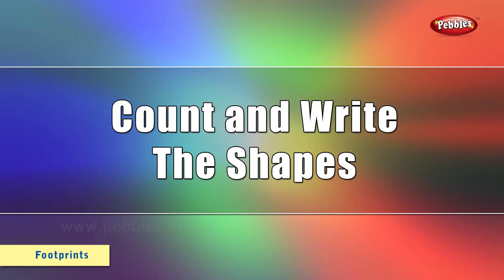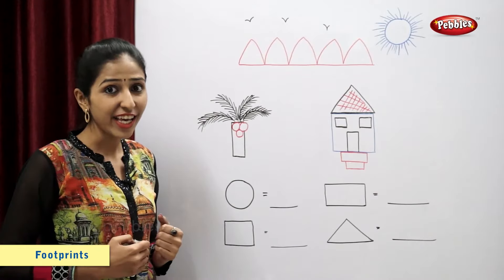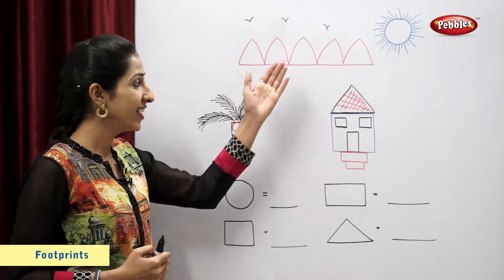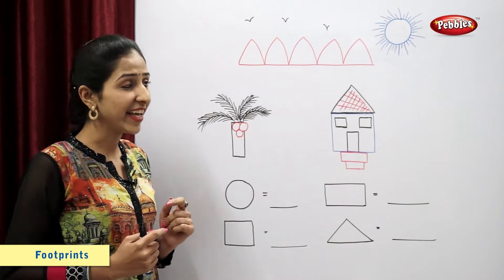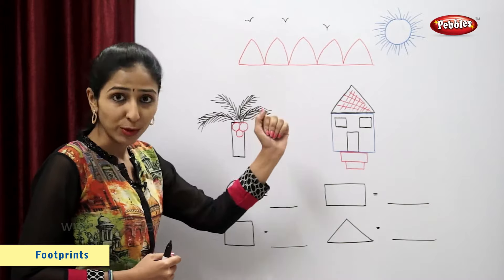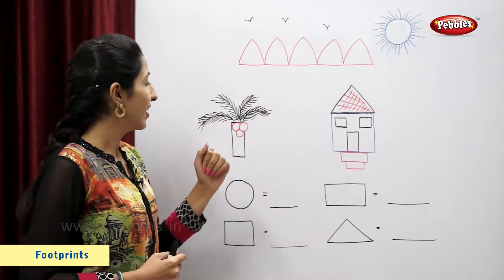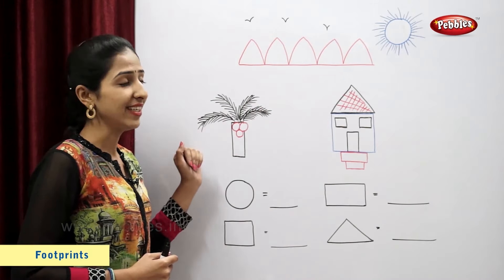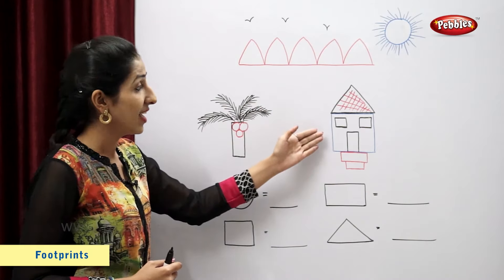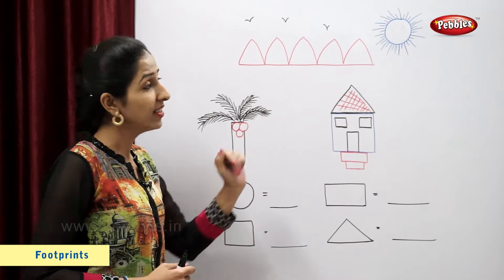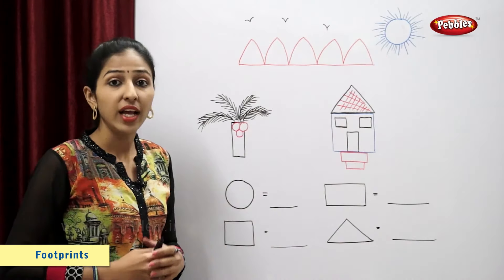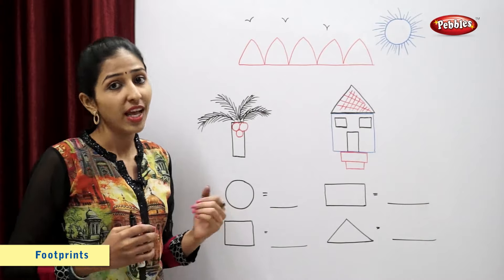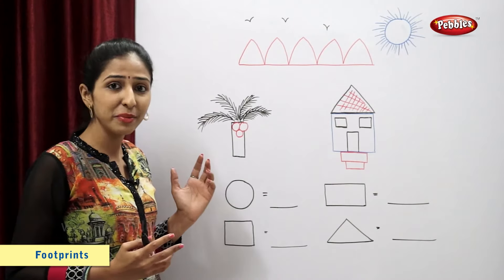Let's count and write the shapes. I have drawn a scenery. It has mountains, a coconut tree, a house and a sun. So now let's count and write the number of shapes.